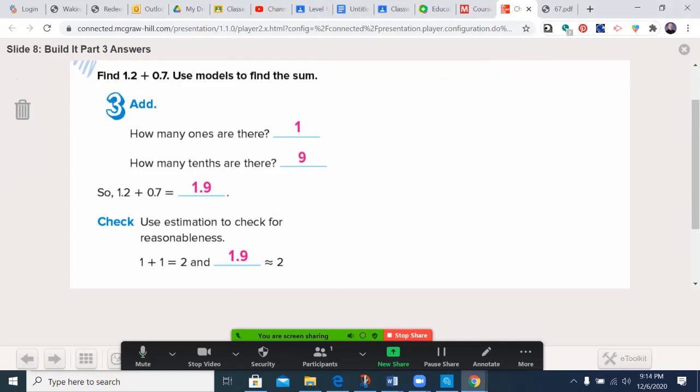And if you had checked your answer, if you did an estimation, 1.2 is close to 1, 0.7 is close to 1, 1.9 is pretty close to 2.